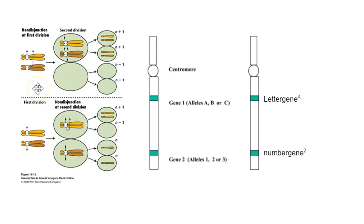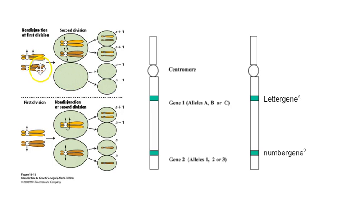If non-disjunction happens during meiosis one, one of the outcomes is that the homologous pairs of chromosomes, which should have been pulled apart at the first division — the golden one here and the browner one — instead fail to separate. They both go into one of the two cells that comes out of meiosis one, and the other cell does not receive a copy of this chromosome pair. So after meiosis two concludes, two of the four gametes will be missing any member of this chromosome pair, and two will contain one extra member.